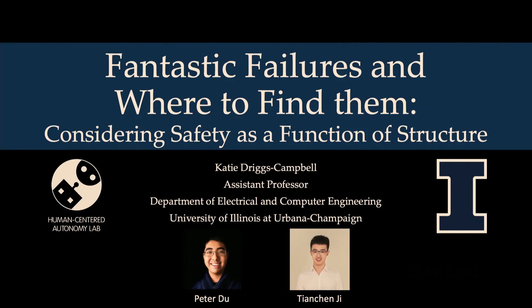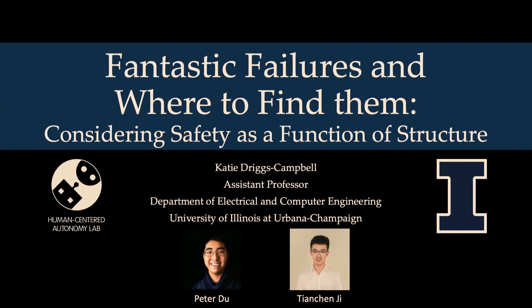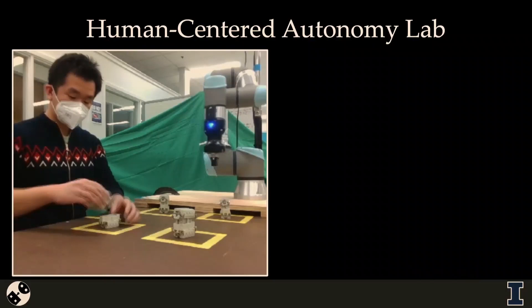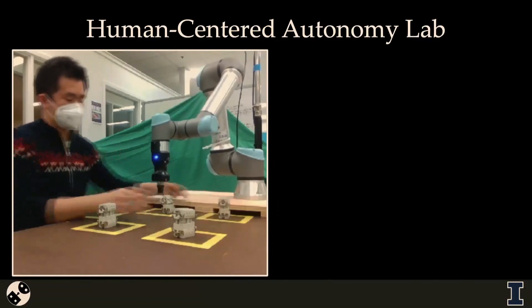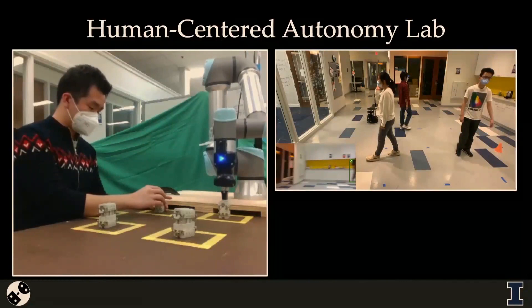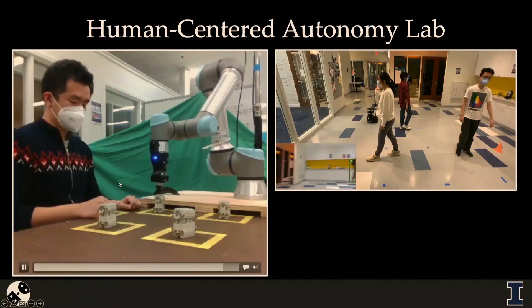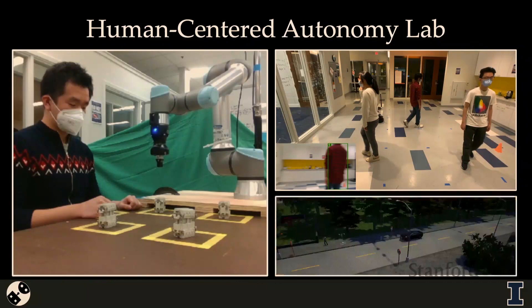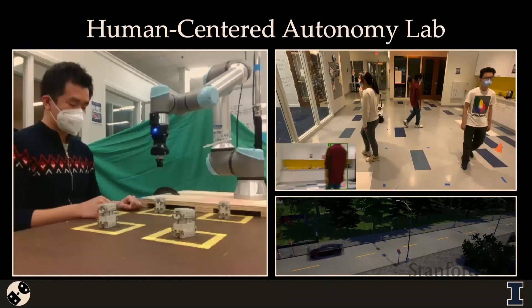I run the Human-Centered Autonomy Lab. What we try to do is basically push the limits of robotics so we can have more collaborative robots that work right alongside people — either in a very collaborative sense or in a sense where these robots need to work around people. We also assess safety, so when we really think about deployment, we can make sure these things are going to work as we want. As you can tell from the different pictures, there are a lot of different types of applications that we look at.